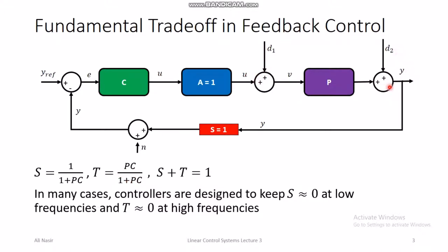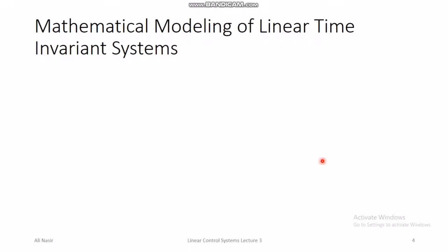The effect of disturbances on the output is measured by the sensitivity function. The fundamental trade-off in feedback control design is that sensitivity plus complementary sensitivity always equals one. If you try to suppress the effect of noise on the output, the effect of disturbance is amplified, and vice versa. You hope that noise and disturbances occur at different frequencies, and in frequency-domain control design we design the controller to have low sensitivity at disturbance frequencies and low complementary sensitivity at noise frequencies. That was lecture two; lecture three covers mathematical modeling of linear time-invariant systems.